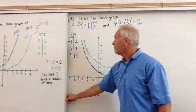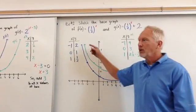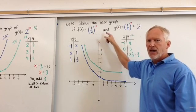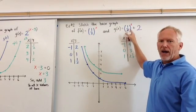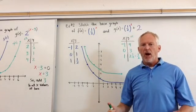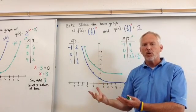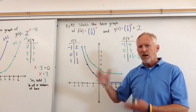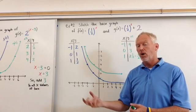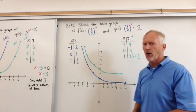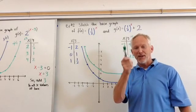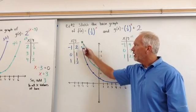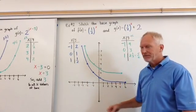Alright, let's look at the next example. Example number 2 says sketch the base graph of f(x) equals 1 half to the x and g(x) is equal 1 half to the x plus 2. Now pause it for a second and ask yourself, is this a growth model or a decay model? And how do you know? Rewind, go back to the rules and see where is that b value? Is b value greater than 1 or what's happening with the b value? Alright, you were right. It's a decay model. So here we go. Let's see what a decay model looks like.